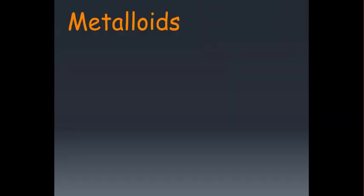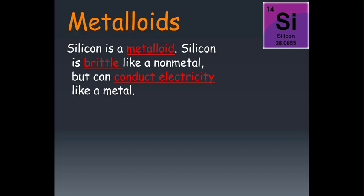Metalloids are very unique in the elements found on the periodic table. Metalloids have properties of both metals and non-metals, and what that means is that they can be used in very unique ways. For instance, silicon, Si, is a metalloid. Silicon is brittle, like a non-metal, but it conducts electricity like a metal. And because of this very unique property, we have learned to use silicon in very interesting applications.